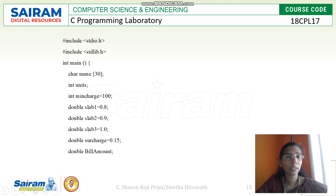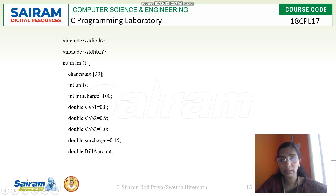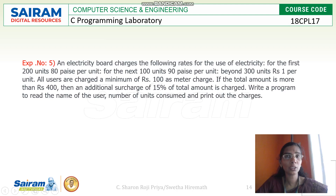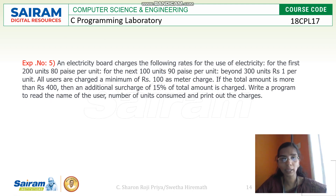The units variable is an integer value, and the minimum charge of 100 is also in integer data type. For the remaining slabs, I have 3 slabs according to the question: the first 200 units at 80 paisa, next 100 at 90 paisa, and beyond 300 at 1 rupee.